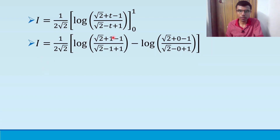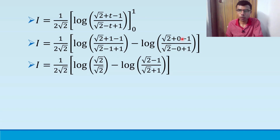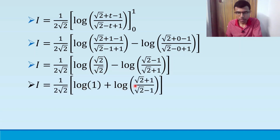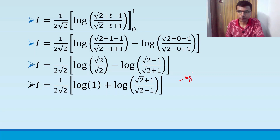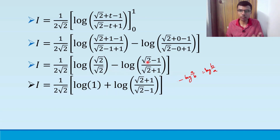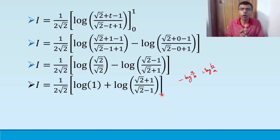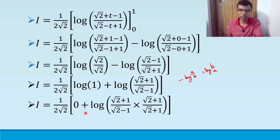Substituting t = 1 gives (1/2√2) log |(√2 + 0)/(√2 - 0)| = (1/2√2) log 1 = 0, since log 1 = 0. Substituting t = 0 gives (1/2√2) log |(√2 - 1)/(√2 + 1)|. Using the logarithm property that -log(a/b) = log(b/a), minus log|(√2-1)/(√2+1)| becomes log|(√2+1)/(√2-1)|.